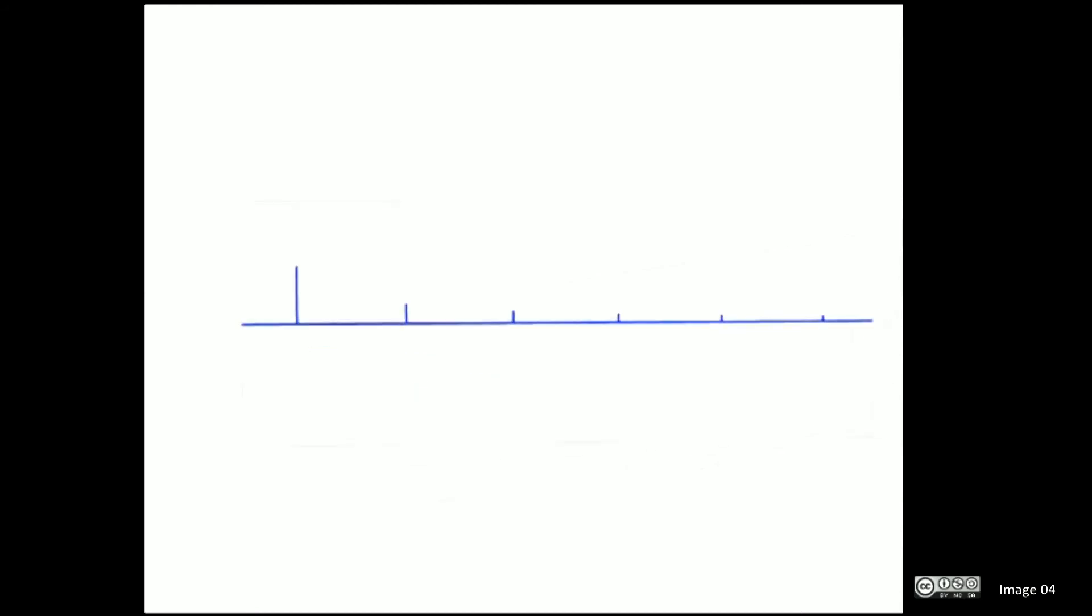We can now see the Fourier transformation result of our original waveform in blue. We use the notation f hat for this representation of the data that is now in frequency space.